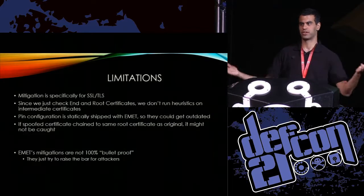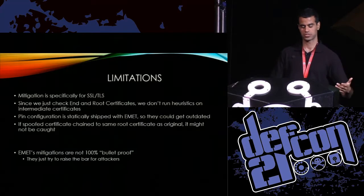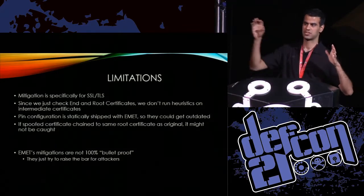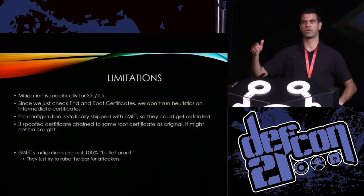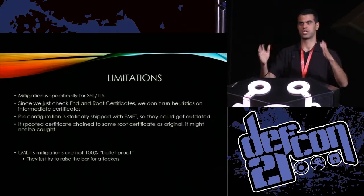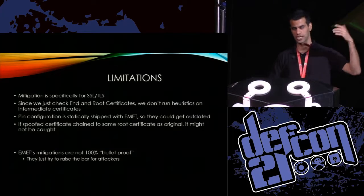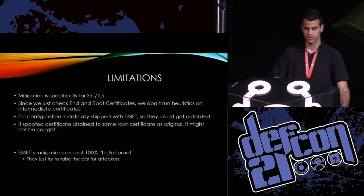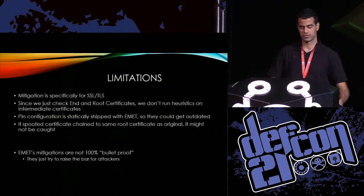Some limitations: we mitigate specifically for SSL and TLS, not other crypto protocols. We're only checking the end and root certificates, not the intermediate certificates — that's a possible limitation. The pin configuration is statically shipped with EMET — we're not pushing down new configuration like Windows Update, so it could be outdated if a company changes the root they chain their certificates to. And in general, EMET's mitigations are not 100% bulletproof — they're trying to raise the bar for attackers, but there are ways to get around it.